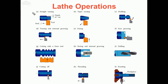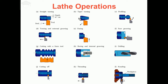Now let's start with lathe operations. The first operation is straight turning. In a straight turning operation, we reduce the diameter of the workpiece. The original diameter was a certain amount and the final diameter is reduced. The difference between the diameters divided by two equals the depth of cut provided, and we move the tool in this direction.